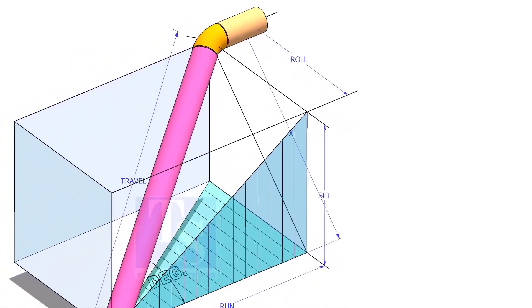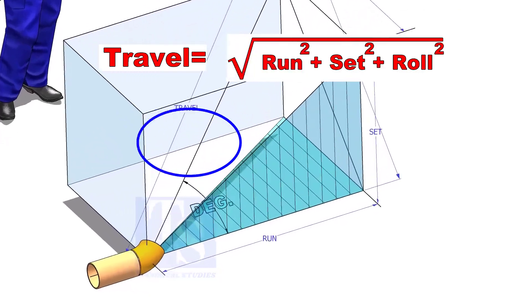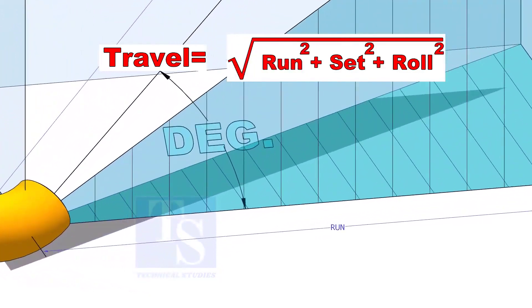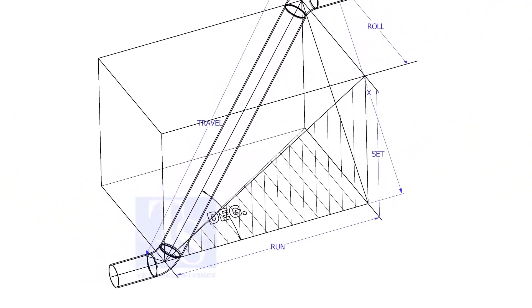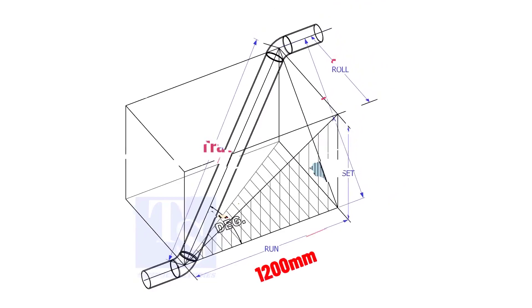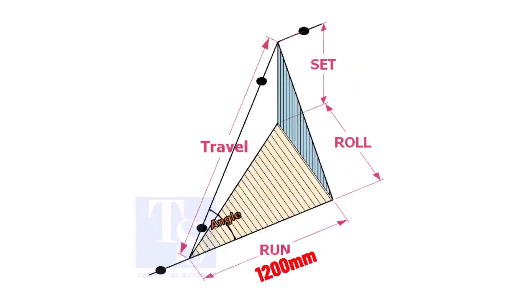The formula to calculate the travel length is the square root of the sum of run squared, set squared, and roll squared. Assume that the run is 1200 mm, set is 1000 mm, and the roll is 800 mm.